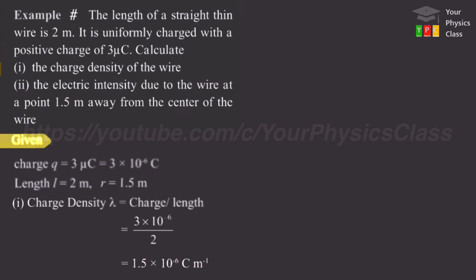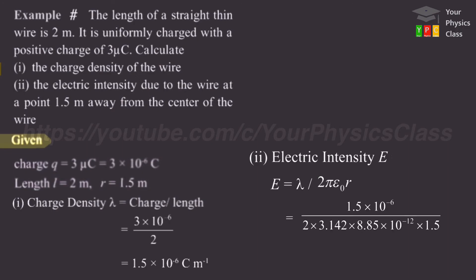Ab hame find karna hai electric intensity E. Friends, is cheez ke liye humare paas formula ready hai, lambda upon 2 pi epsilon 0 r. Yahan per hum sabhi value substitute kar denge. This newly determined lambda ka value bhi yahan per put kar diya. And then 2 pi ka value 3.142 and dala hai.